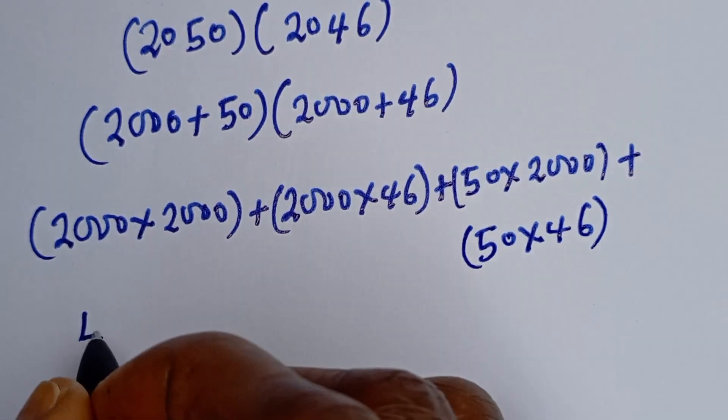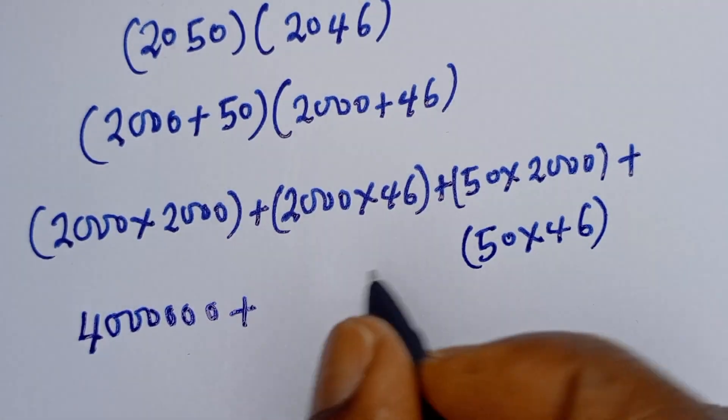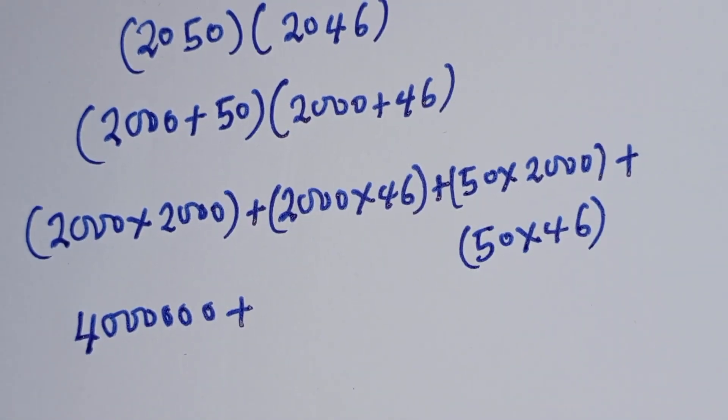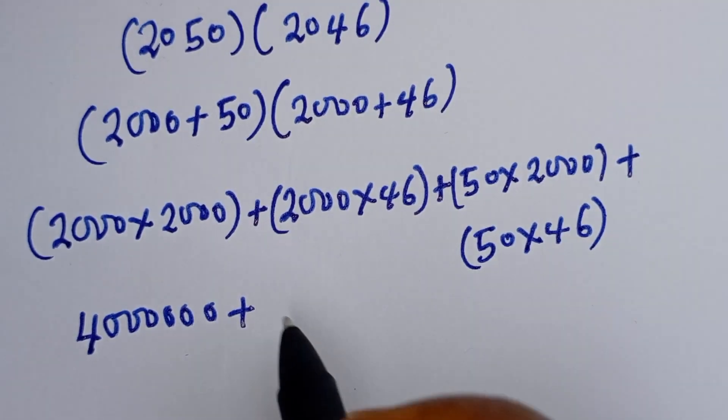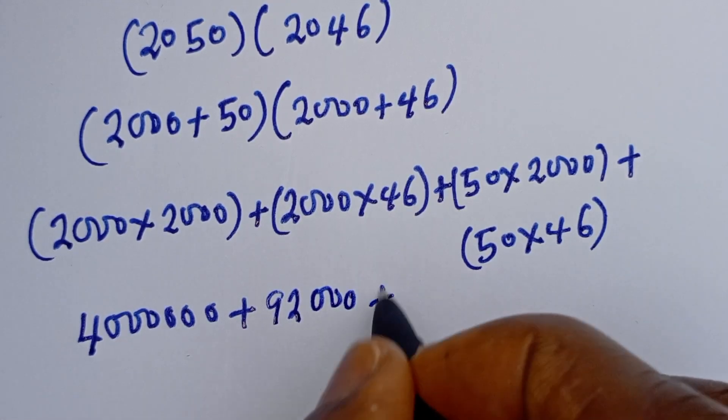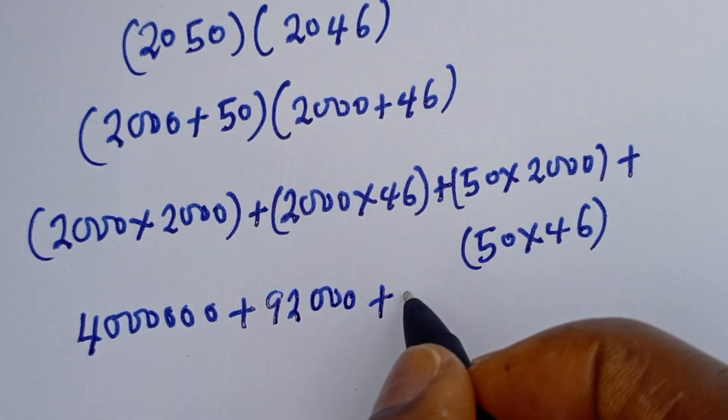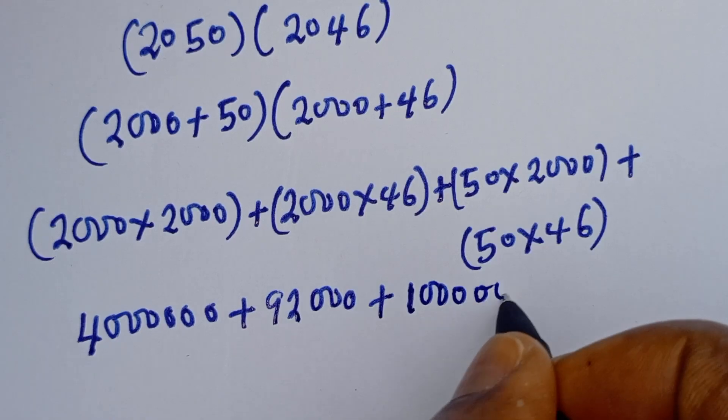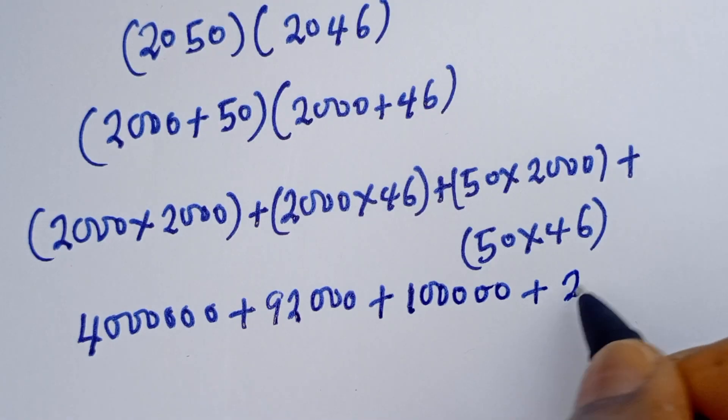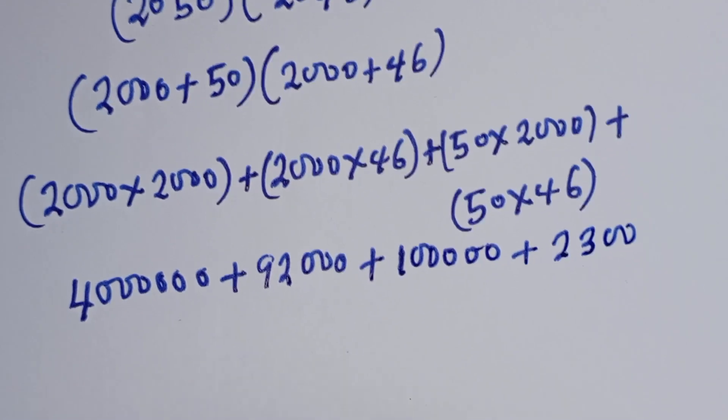Here we have 2000 times 2000, that is 4,000,000, plus 2000 then 46, that is 92,000, plus 50 times 2000, that is 100,000, plus 46 times 50, that is 2300.